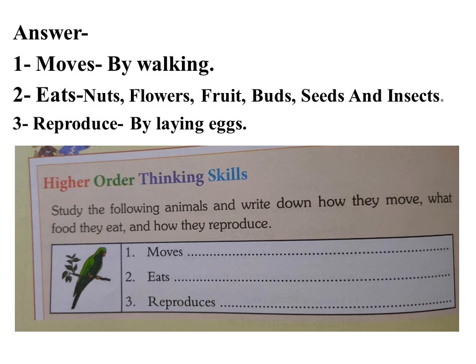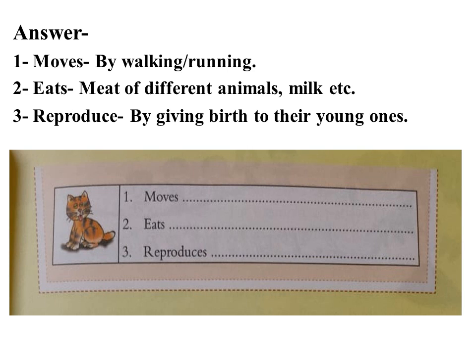The question says: study the following animals and write down how they move, what food they eat, and how they reproduce. The answer: first, the parrot — it can move by walking. The parrot can eat flowers, fruit, bird seeds, and insects. How do they reproduce? They reproduce by laying eggs.